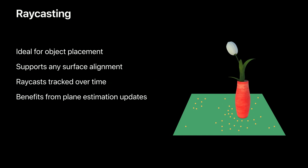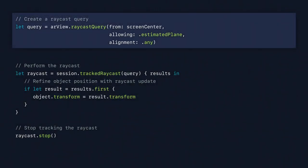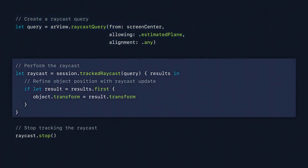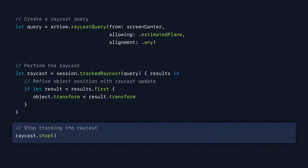Here's how to enable raycasting in ARKit. Start by creating a raycast query — it has three parameters: first, from where you want to perform the raycast (in this example from the screen center); second, what you want to allow in order to get transforms back; and third, which alignment you want — it can be horizontal, vertical, or any. Pass that query to the trackRaycast method on your ARSession. This method has a callback allowing you to react to the new transform and result so you can adjust your content or anchors. When you're done, you can simply stop the raycast.